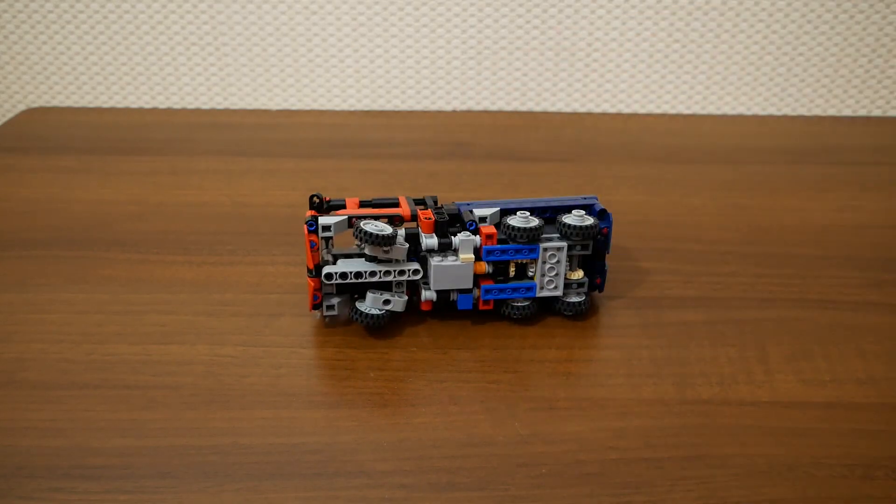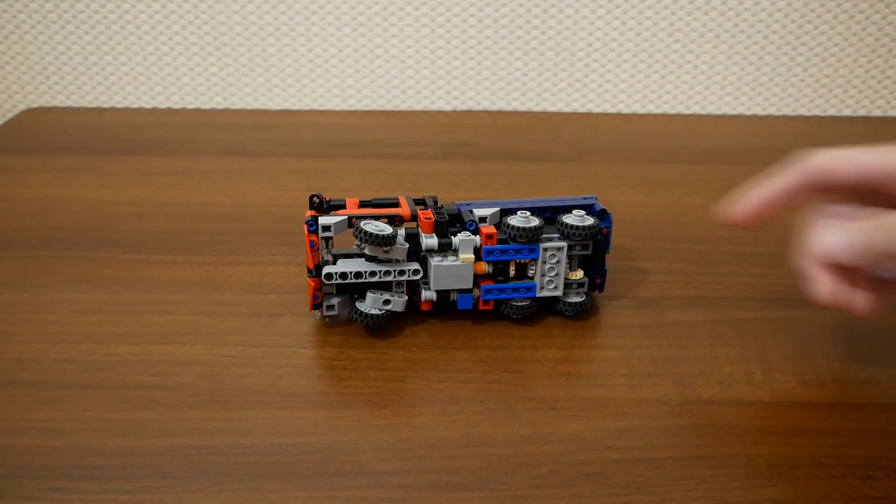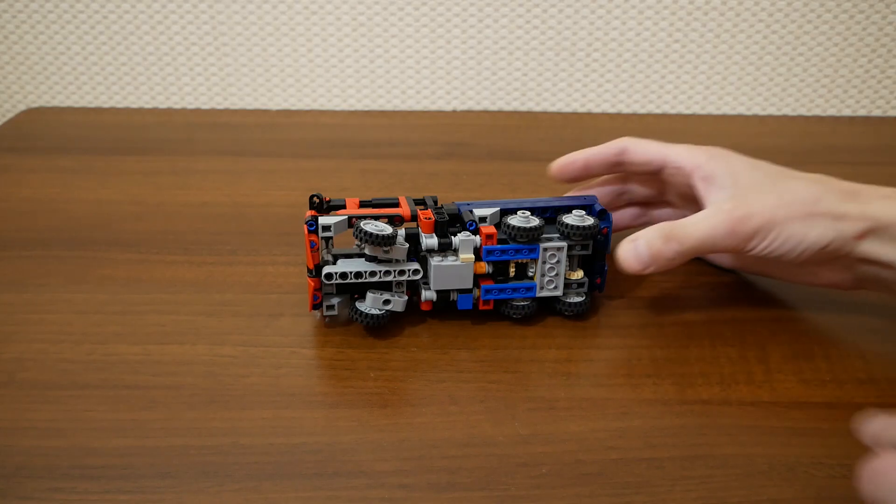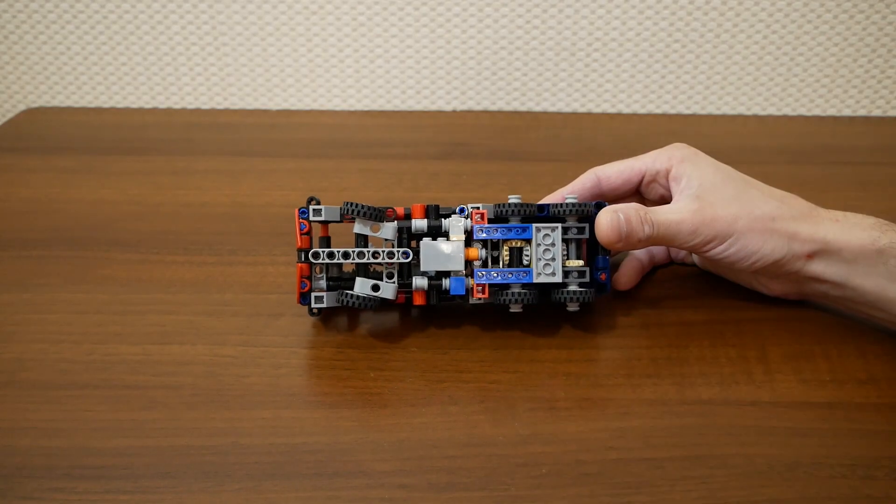One micromotor for, let it be, rear wheel drive. Two rear axles. Here just bevel gears, no differential gears.